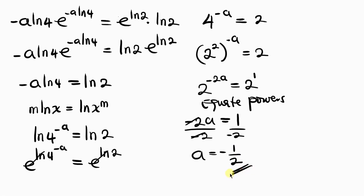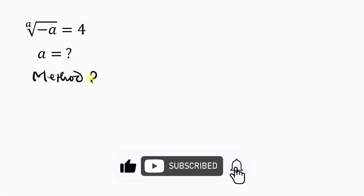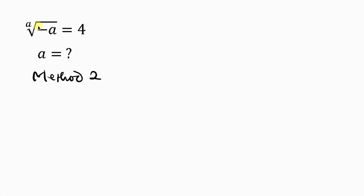Method 2 is actually shorter and more interesting. For method 2, our first step is to write this in exponent form, so it becomes negative a to the 1 over a equal to 4.